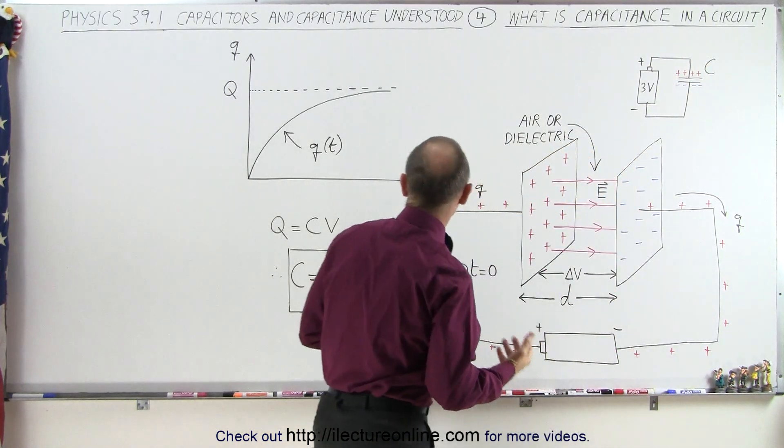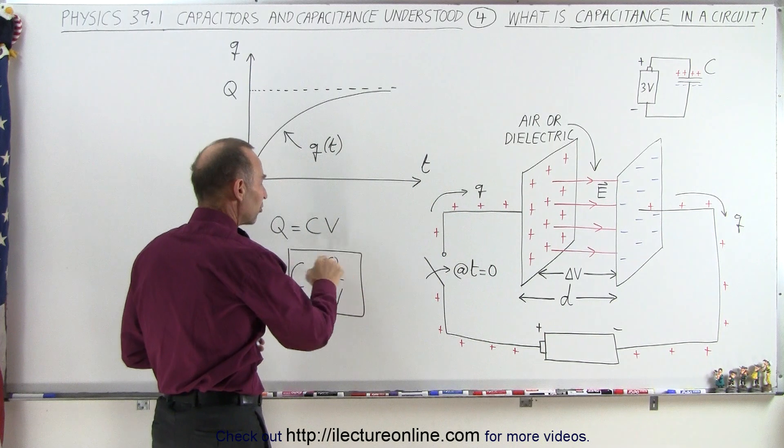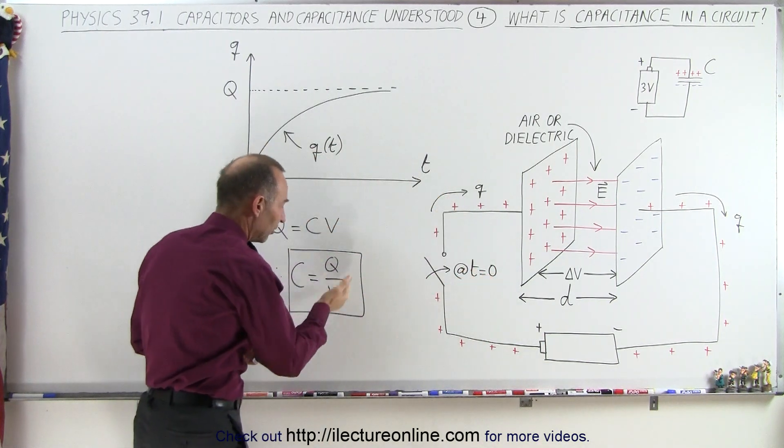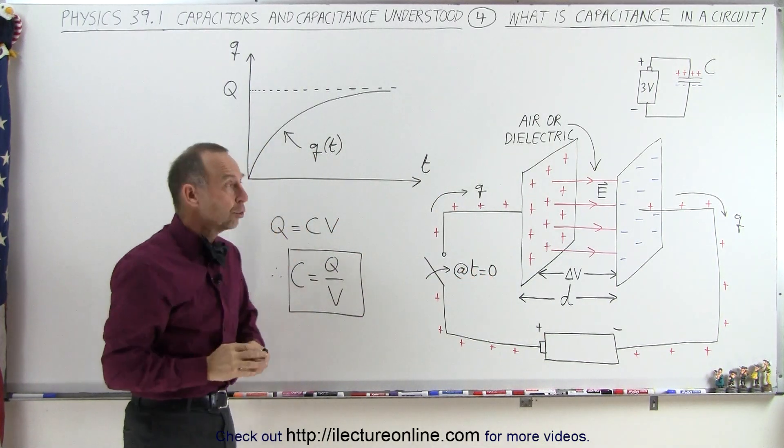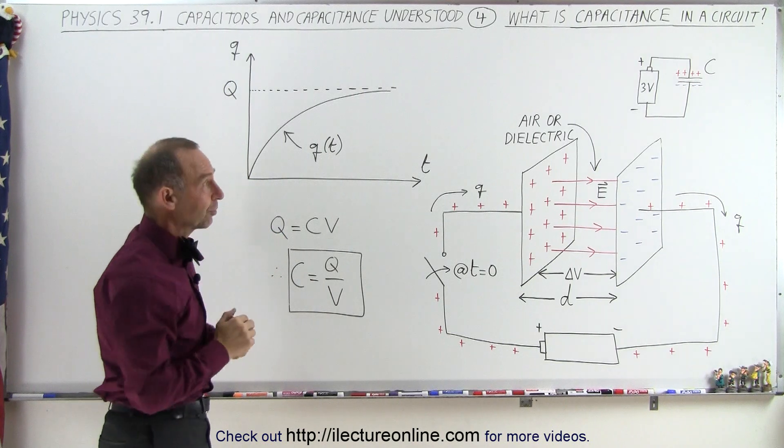The capacitance, of course, is defined as the amount of charge that gets placed onto the capacitor divided by the voltage applied to the capacitor or across the terminals of the capacitor.